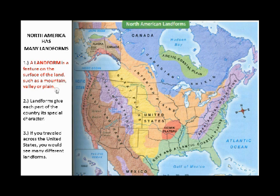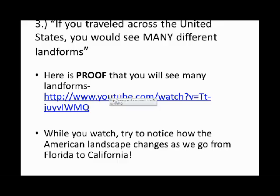We're going to start out with the landforms of North America, and this is the map that we're going to be using. North America has many landforms. A landform is a feature on the surface of the land, such as a mountain, valley, or plain. This map breaks down all of the different geographic regions that we have in North America. Landforms give each part of the country its special character.